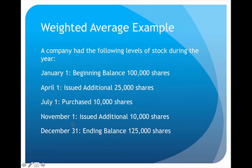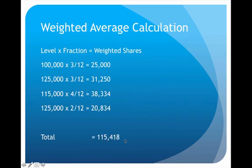The final level: on November 1st they issued an additional 10,000 shares, raising it back up to 125,000, and it stays that way until the end of the year. November 1st to December 31st is November and December — two months — giving a weighted average of 20,834. When doing these calculations, always verify that your fractions add up to 12 out of 12 months. They do, so totaling all four levels gives 115,418 — meaning the weighted average number of shares for the year is 115,418.